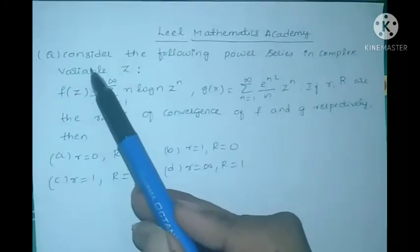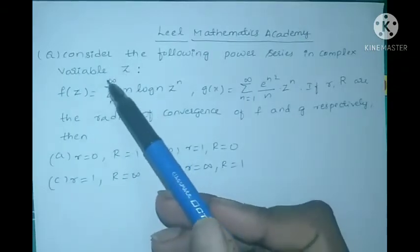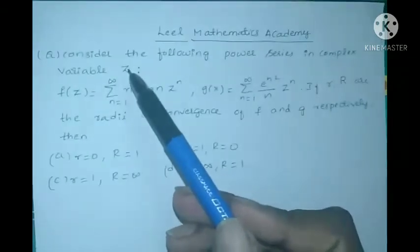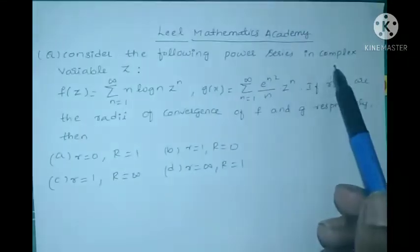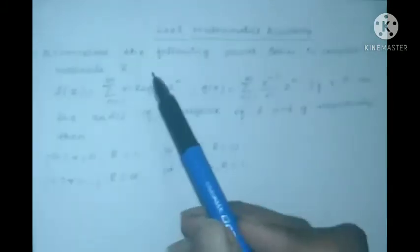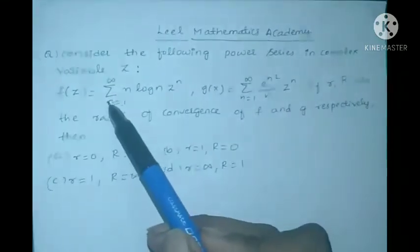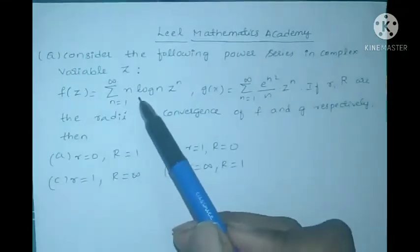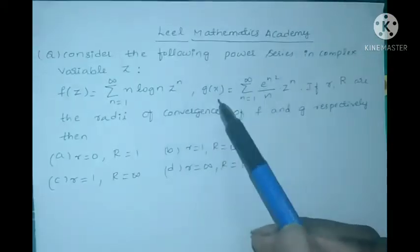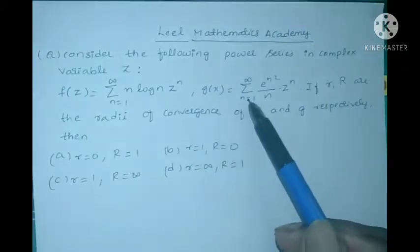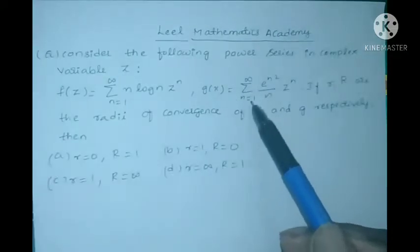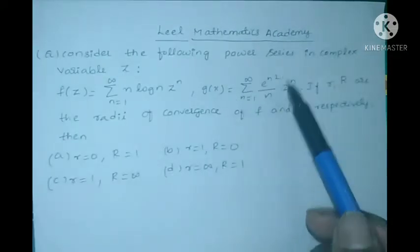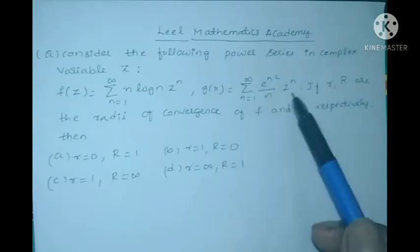This is the problem asked in higher mathematics examinations. Consider the following Power Series in complex variable Z. f(Z) is equal to summation n=1 to infinity of n·log(n)·Z^n, and g(Z) is equal to summation n=1 to infinity of e^(n²/n)·Z^(4n).